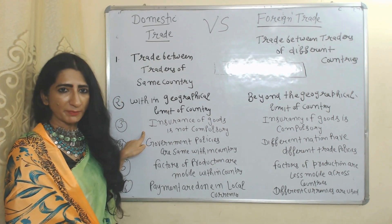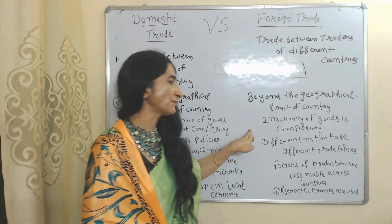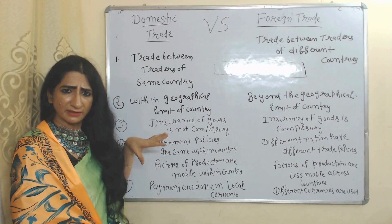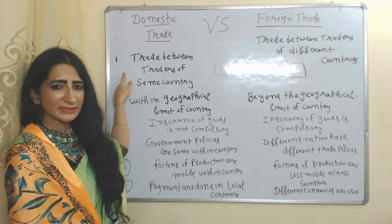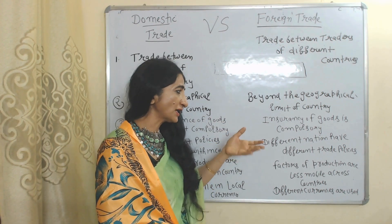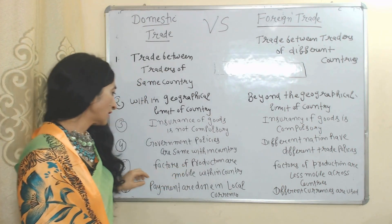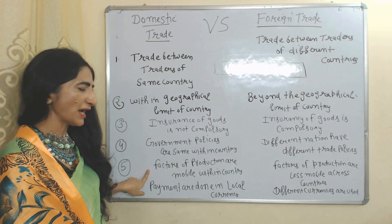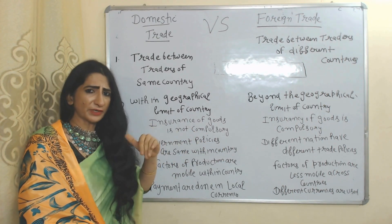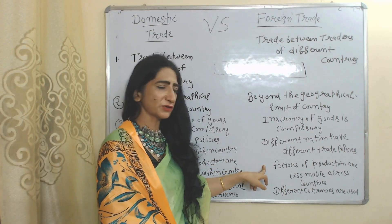Insurance of goods is not compulsory in case of domestic trade, but it is compulsory in case of foreign trade. Government policies are the same within a country in case of domestic trade, but in case of international trade, different nations have different trade policies which overall influence trade.